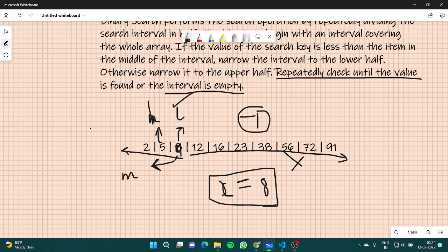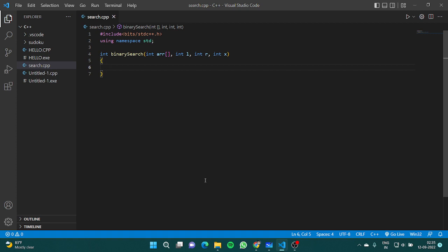I hope you understood how to perform a binary search and what is the main idea behind binary search. Now let's try and code this. Let's go to our Visual Studio code and let's try and code this. So in binary search, I've already passed array as our argument, L as our argument, R as our argument, and X the number which we have to find as our argument.